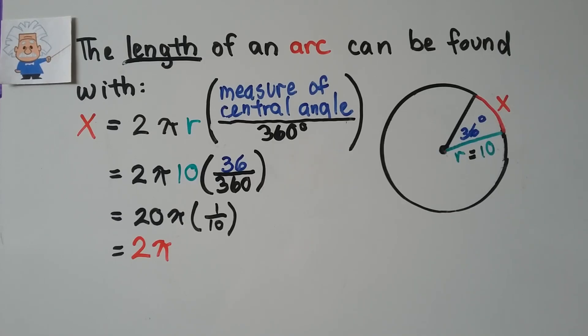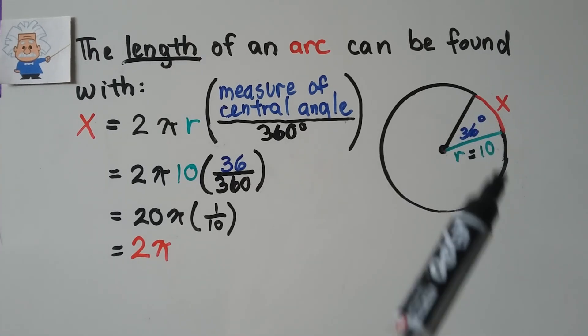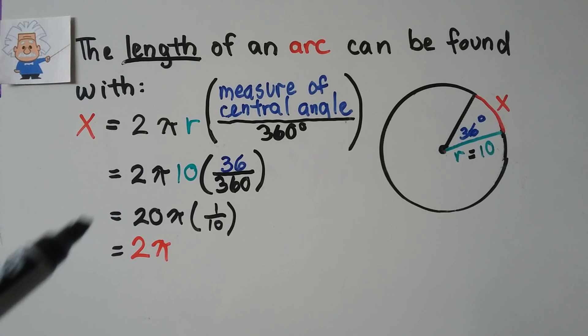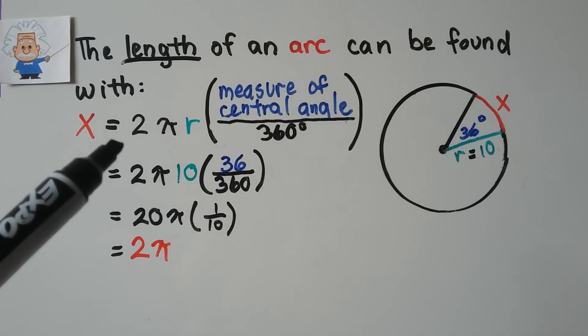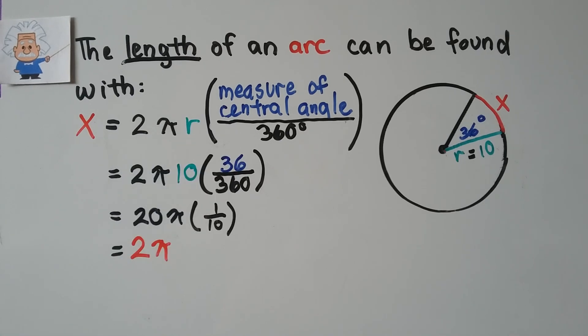So this is a little extra. It's a little bonus information. We've been talking about central angles and their measures. The length of an arc can be found with, so if we're looking for length X, it would equal 2 pi R times the measure of the central angle divided by 360 degrees. So it would be 2 pi R multiplied by the quotient of the measure of the central angle and 360 degrees.